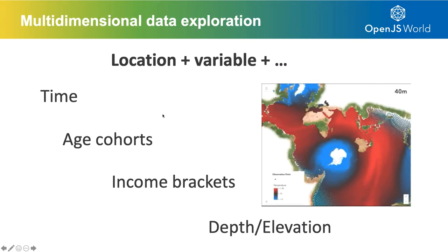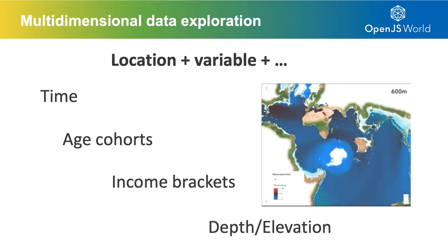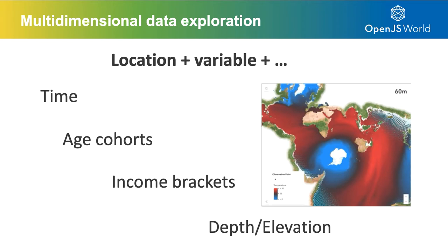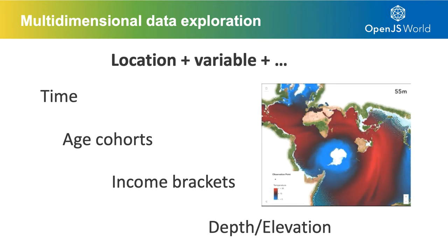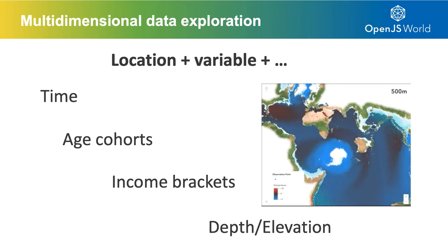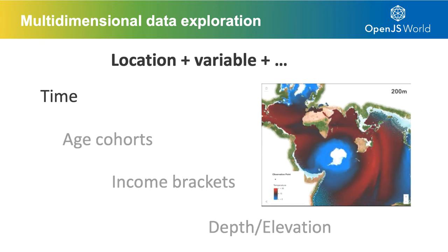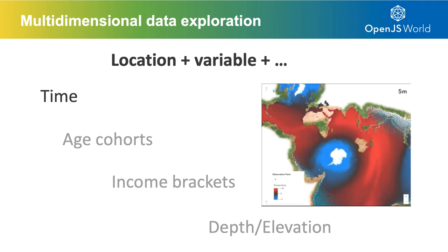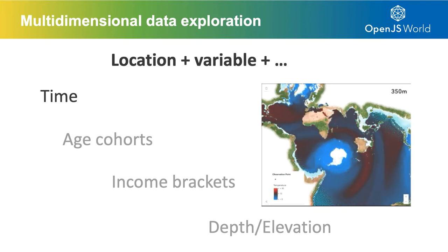We can look at the number of infections or the rate of infection over time, which requires a constant set of stops and then updating the value. That's a technique called multidimensional data exploration — taking dimensions such as location and a variable, like temperature in the ocean as shown in this GIF, and exploring with another dimension such as time, age and cohort, income brackets, or Z values like depth and elevation, which is the third dimension being used in this particular application.